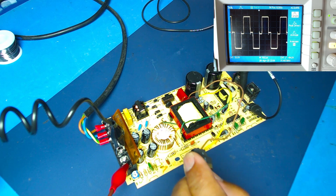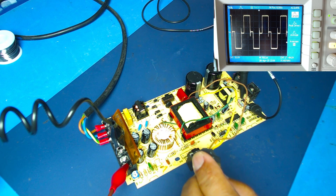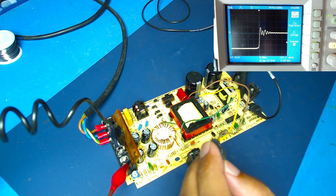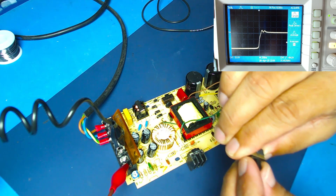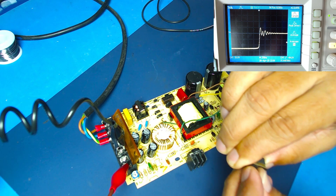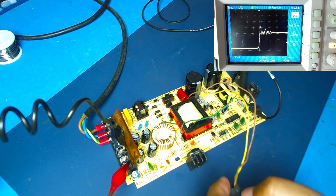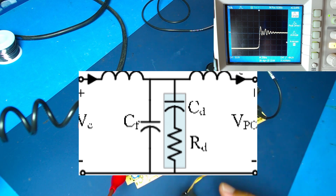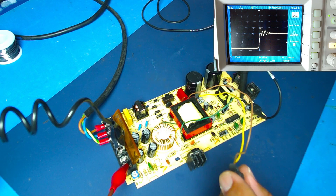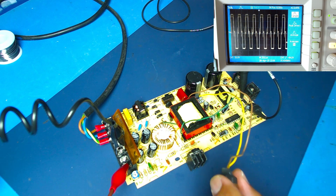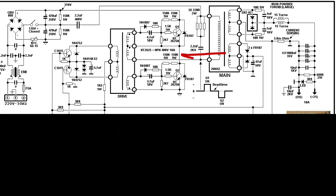Now we will disconnect the snubber circuit. Then we will observe oscillations as well as the flyback topology. We will talk about the RCD snubbers with the RCD damper circuit. We will talk about active clamping in this video. For the forward converter, we will see the oscilloscope screen and then talk about the voltage pattern.